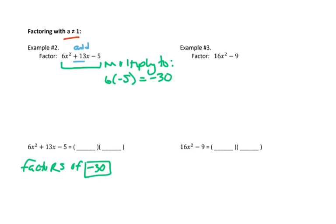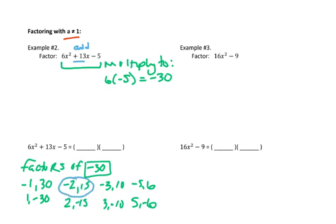So listing out all of our pairs here, we've got negative 1 and 30 and 1 and negative 30. I always start with 1. Then we can do 2, so 2 and 15 or positive 2 and negative 15. 3 definitely goes into 30, so negative 3 and 10 and 3 and negative 10. 4 doesn't go, but 5 does. So we have negative 5 and positive 6 and positive 5 and negative 6. Now we're looking for which ones add to be positive 13. Positive 13, okay, so that's going to be in here. And so this one adds to be positive 13.